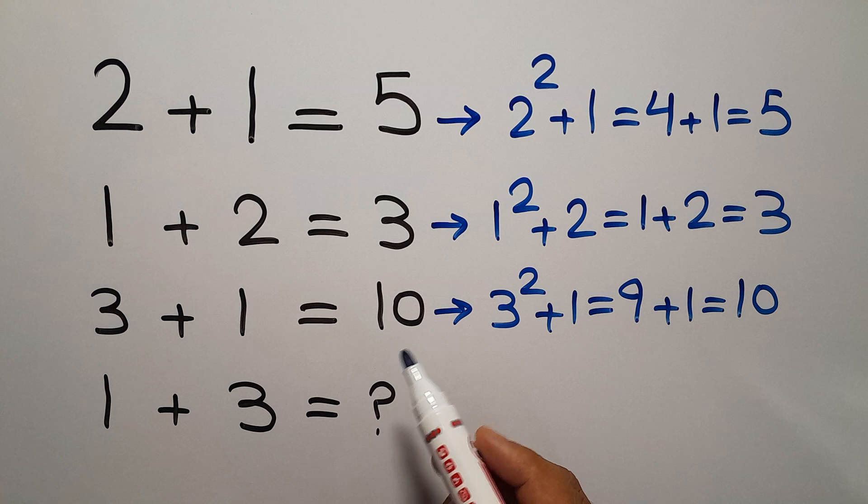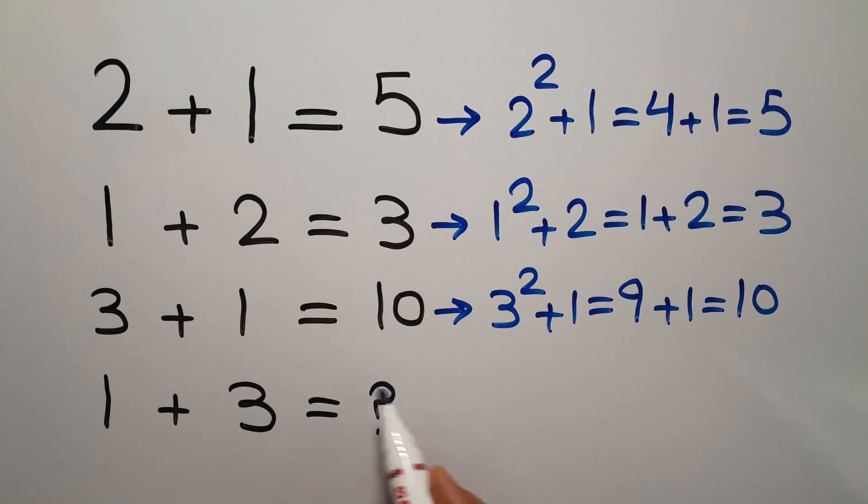Now let's use this pattern to calculate the missing number. In the fourth line we have 1, 3, and question mark. The first number to the power of 2... the first number is 1, so 1 square plus the second number which is 3.